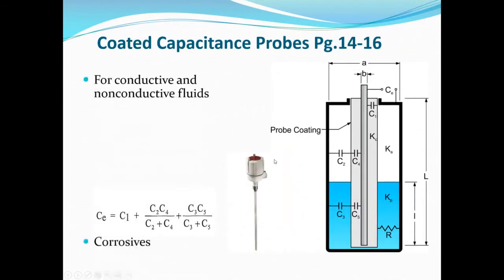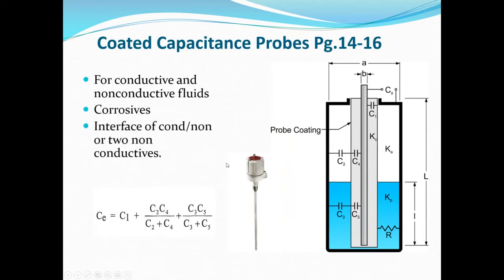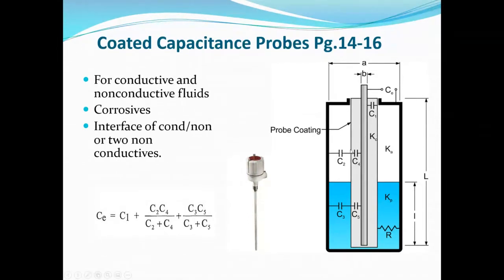Second style: the coated capacitance probe — good for both conductive and non-conductive fluids, good for corrosives, and can be used for interface measurement of conductive with non-conductive fluids. A common application in oil and gas: water is very conductive, oil is not, making a coated capacitance probe a good choice for a three-phase separator. Construction differs from the bare probe because capacitance is introduced by the coating — it looks like it has a Teflon-type coating on it.